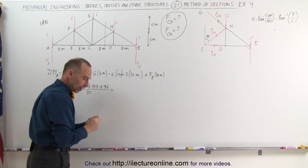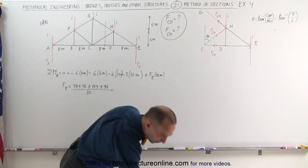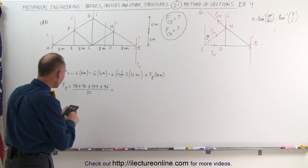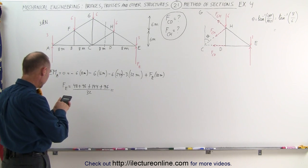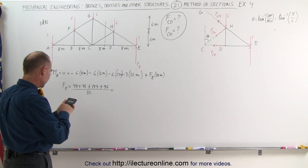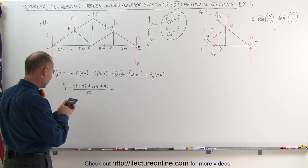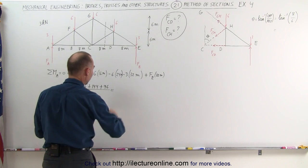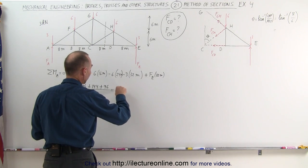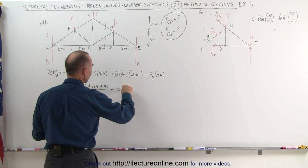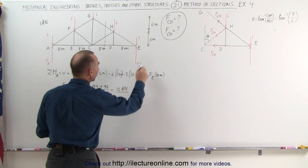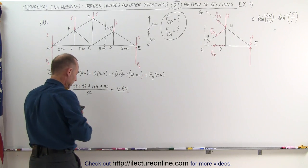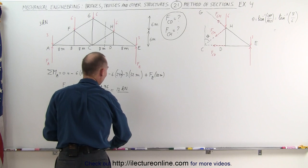So 48 plus 96 plus 96 plus 144, divide by 32, and you get exactly 12. So 12 kilonewtons is the supporting force at E.